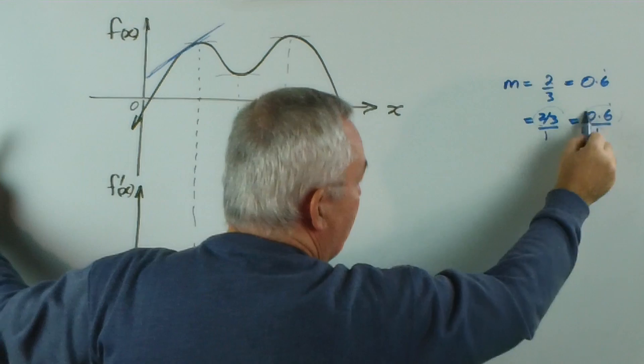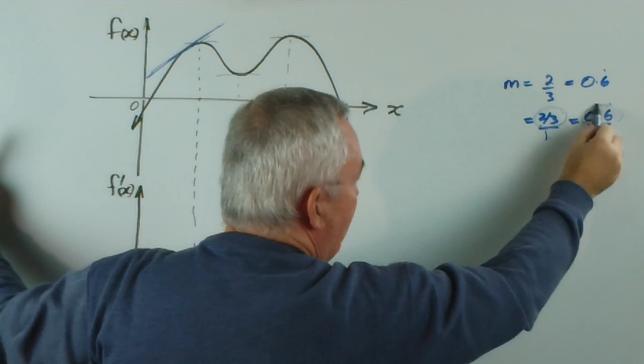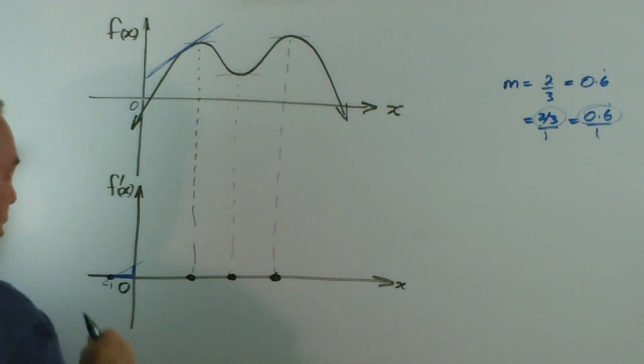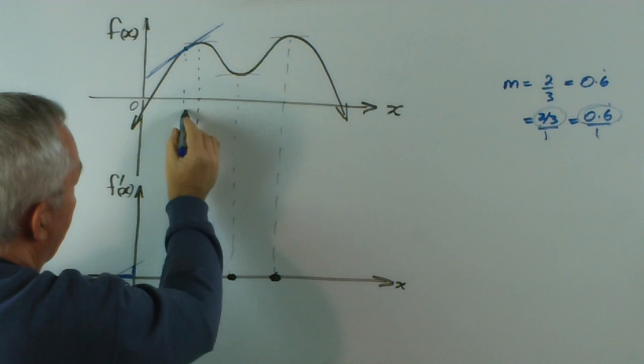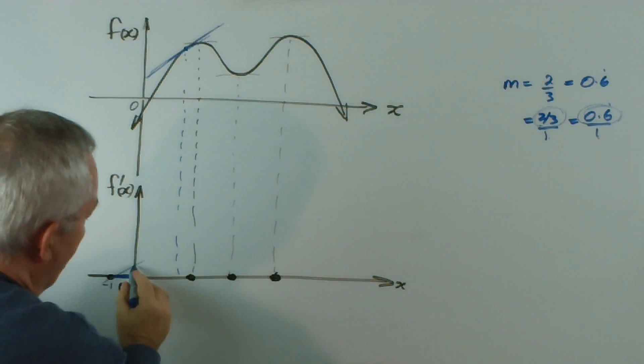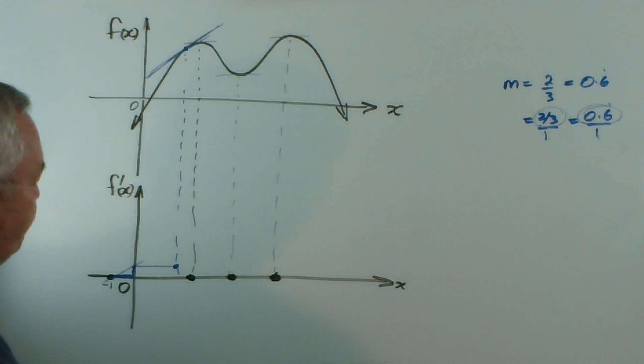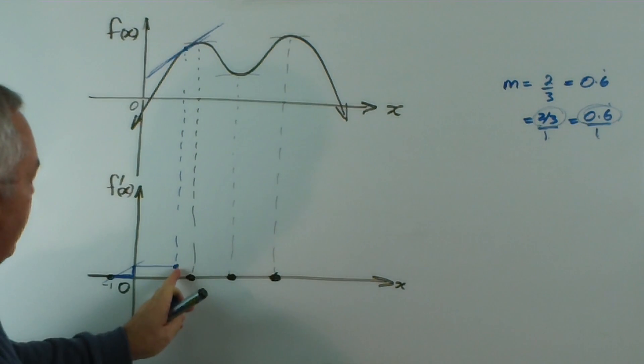If it's over 1, then the rise down here, this rise would be 2 thirds or 0.6 repeater. And, if I move that, if this was the point of contact there, and I move this down, there's the point. At that x value, that's the gradient.